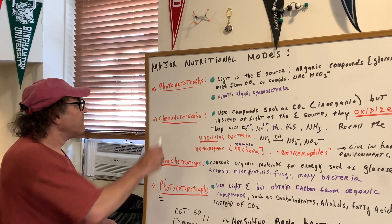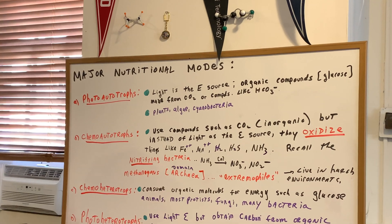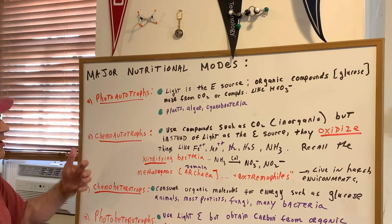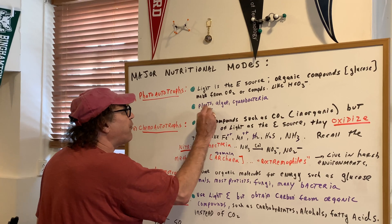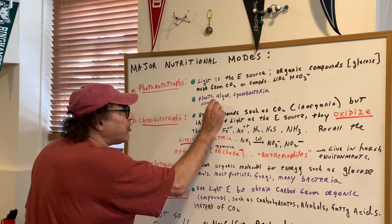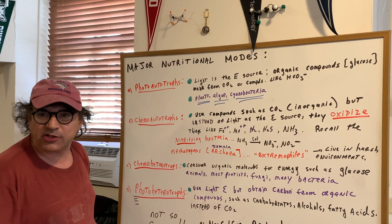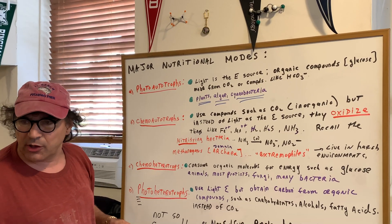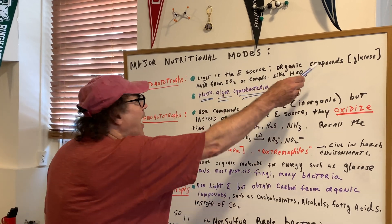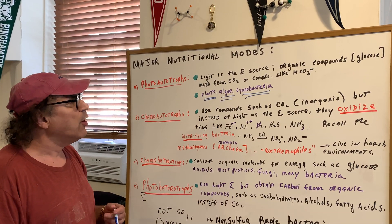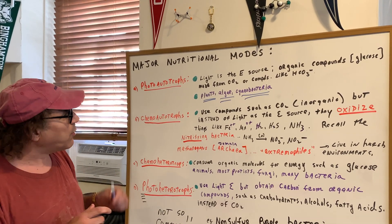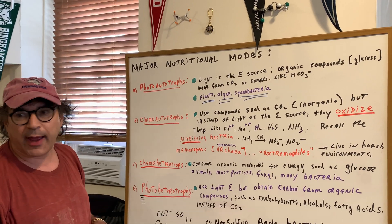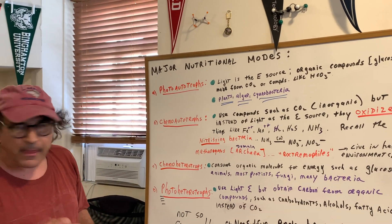Let's start off with the easiest of all first: the photo autotrophs. Photo means light — I think of photosynthesis — and autotrophs are like plants. So the slam dunk example of photo autotrophs would be a plant. Algae would be included there, and cyanobacteria. Light is the energy source; organic compounds such as glucose are made from CO2 or compounds such as bicarbonate.